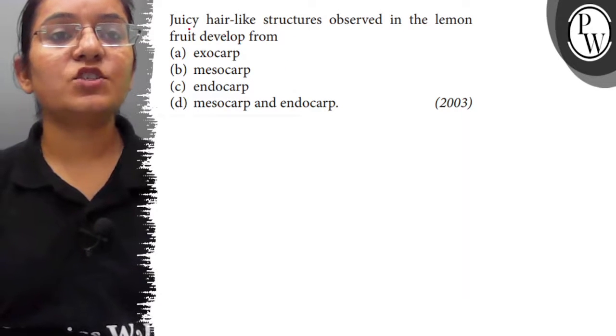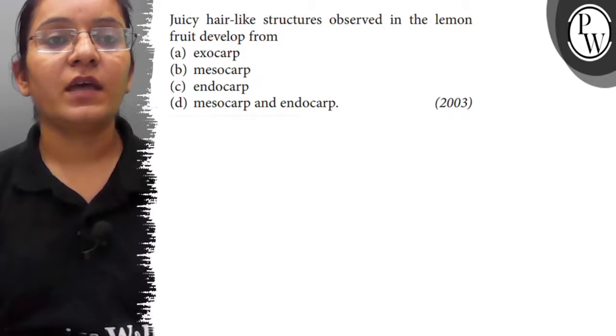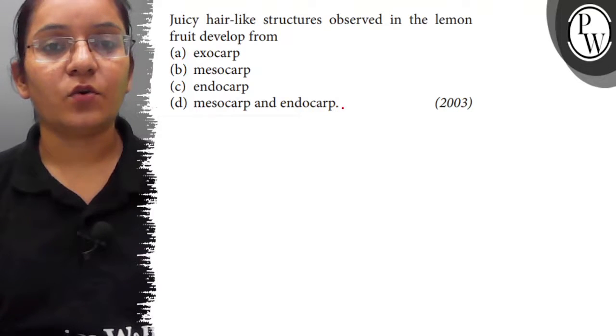Hello students, the question is: juicy hair-like structures observed in the lemon fruit develop from A. Exocarp, B. Mesocarp, C. Endocarp, D. Mesocarp and Endocarp.